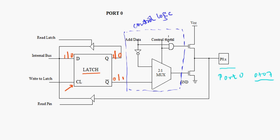If it is being used for input-output operations then it allows this data to pass through. Or if it is being used for external memory then it allows the address and data bit to pass through. That was about the control logic.